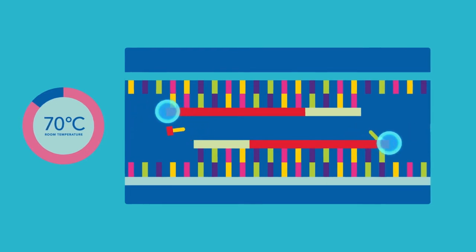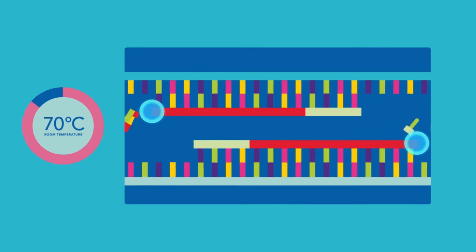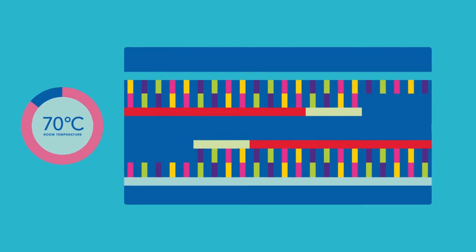After repeating the denaturation, annealing, and extension cycles approximately 35 to 40 times, replication is complete and the newly generated double-stranded DNA may be used for post-amplification analysis.